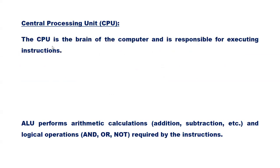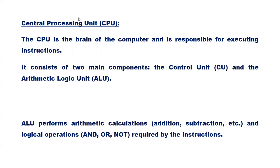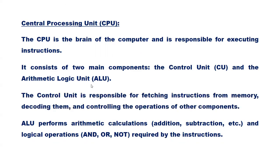The CPU is the brain of the computer and is responsible for executing instructions. It consists of two main components: the control unit and the arithmetic logic unit. The control unit is responsible for fetching instructions from memory, decoding them, and controlling the operations of other components. The ALU performs arithmetic calculations and logical operations required by the instructions.